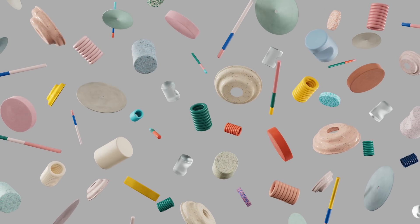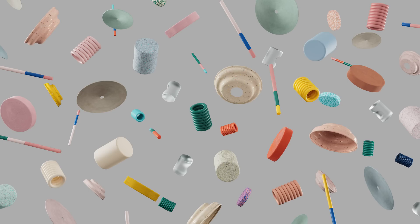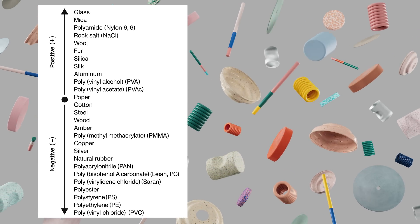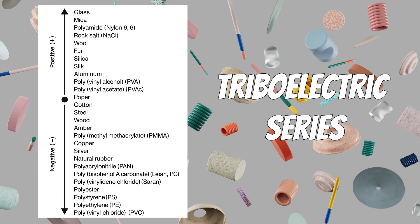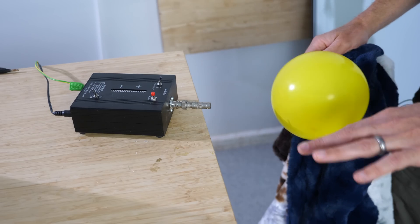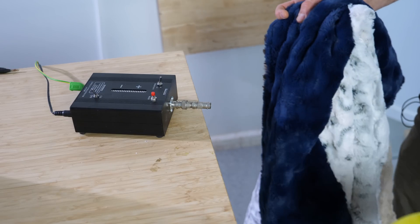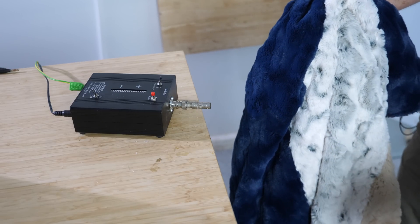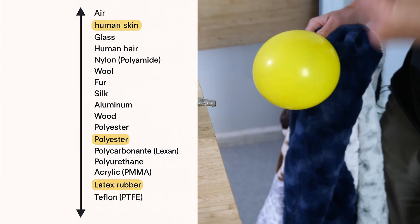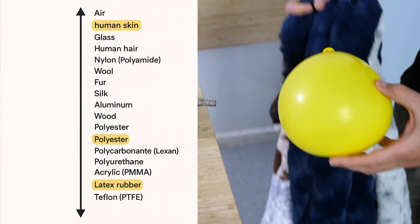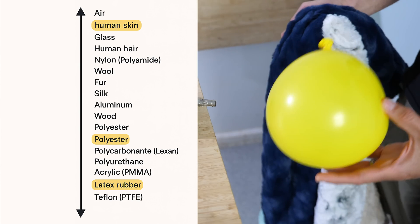You can organize all materials in the world by their tendency to either gain or lose electrons. When you arrange these items in a list, it's called a triboelectric series. For example, I have three different materials here: human skin, a latex rubber balloon, and a polyester blanket. If you look at the triboelectric series of these, the skin is the most positive, followed by the polyester, and then finally the rubber.